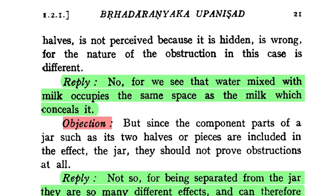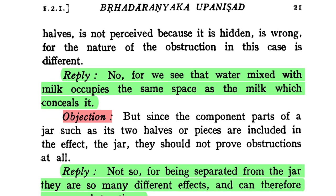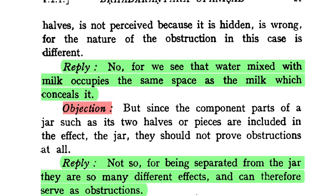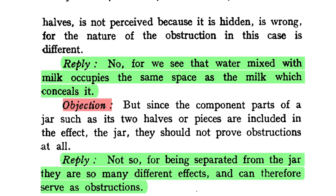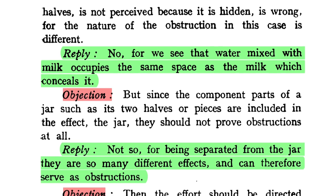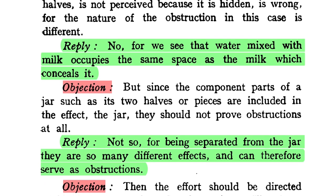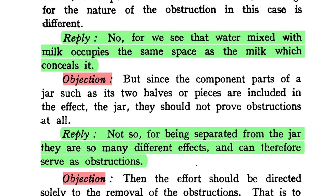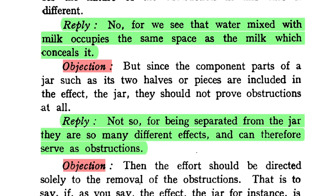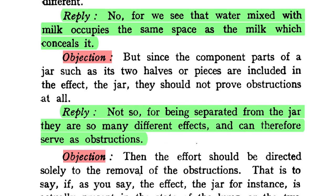Objection: But since the component parts of a jar, such as its two halves or pieces, are included in the effect — the jar — they should not prove obstructions at all. Reply: Not so. For being separated from the jar, they are so many different effects, and can therefore serve as obstructions.